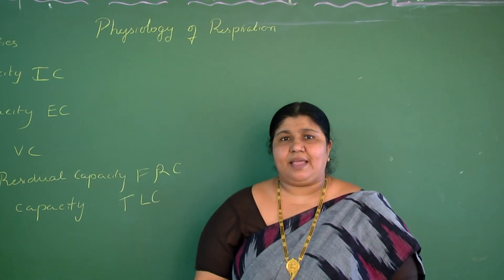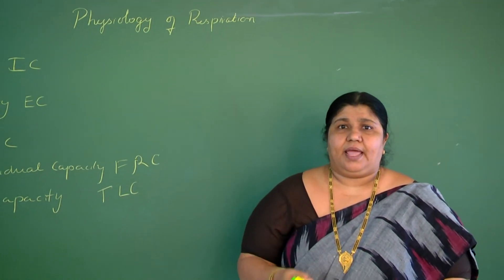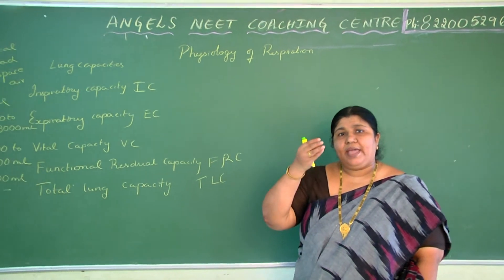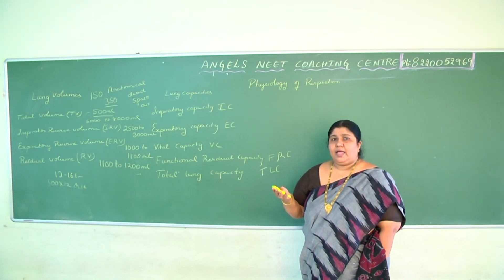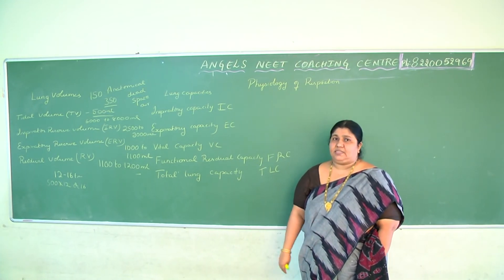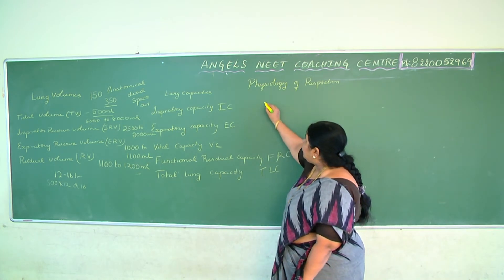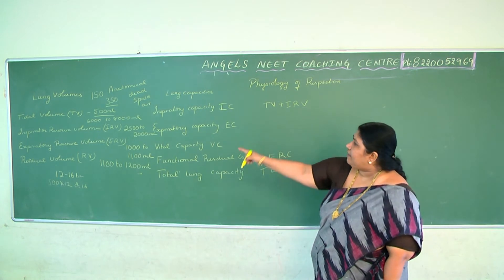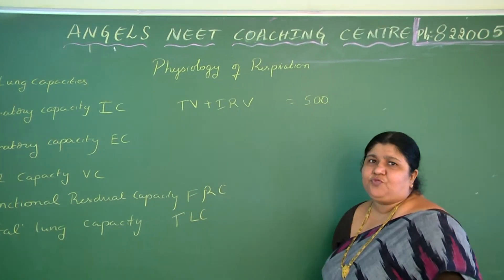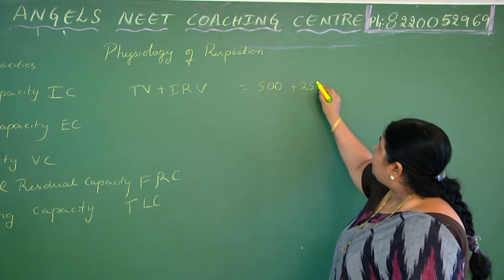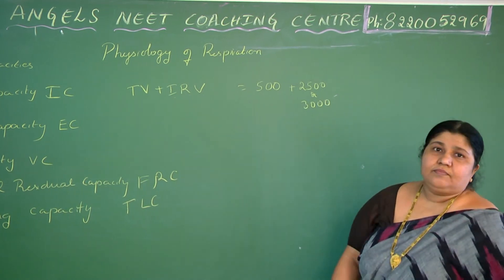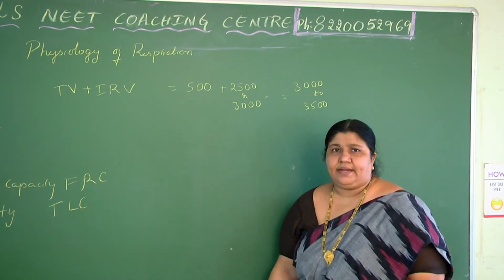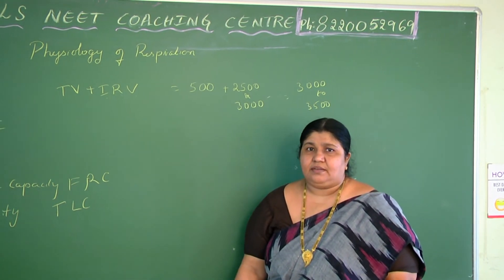What is inspiratory capacity? The total amount of air a person inhales after normal exhalation is called inspiratory capacity. We get it by summing TV plus IRV. Tidal volume is 500, plus IRV of 2,500 to 3,000, gives us 3,000 to 3,500 ml — that is the inspiratory capacity.